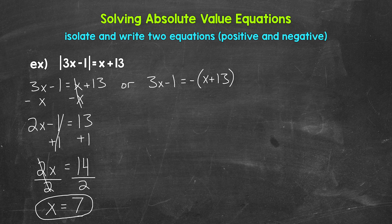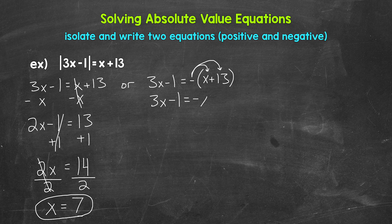Now let's solve our negative equation. The first thing we need to do is distribute the negative to what's inside the parentheses — x and 13. Let's think of this negative as negative 1. So we are distributing negative 1 to x and 13: negative 1 times x and negative 1 times 13. That gives us 3x minus 1 equals negative x minus 13.